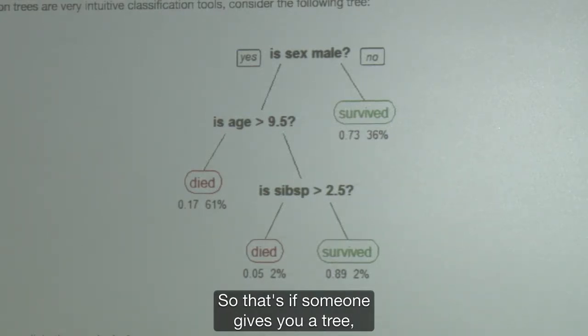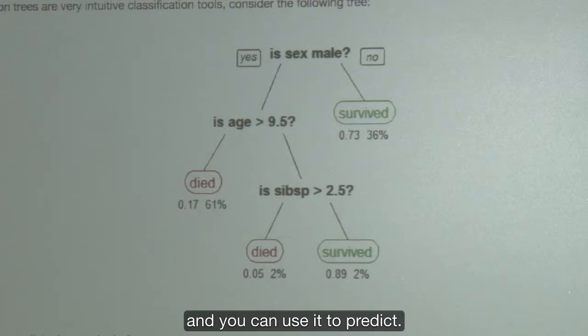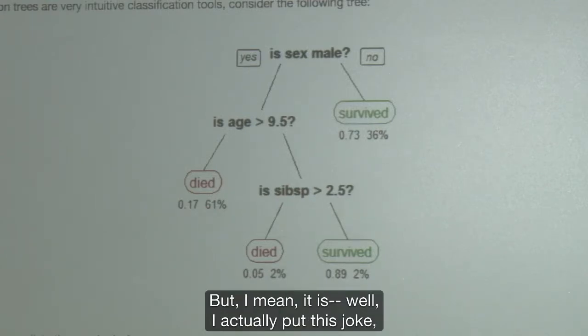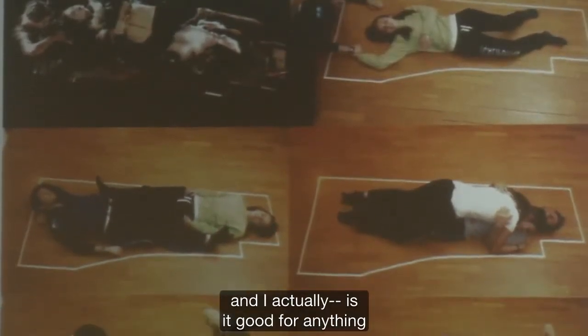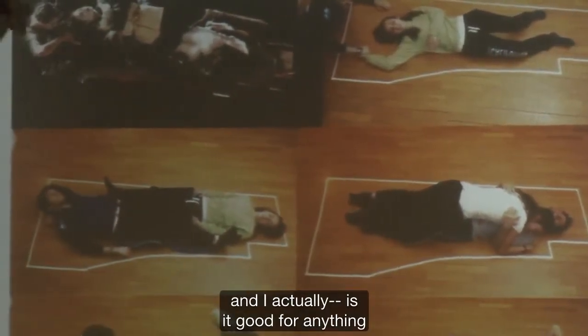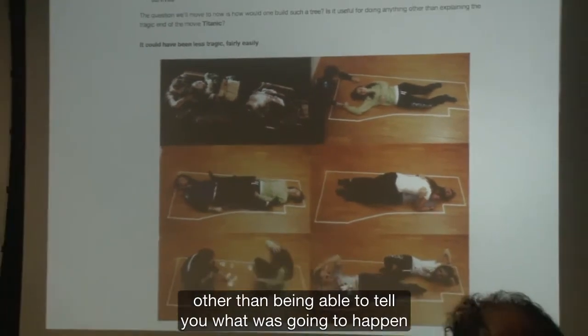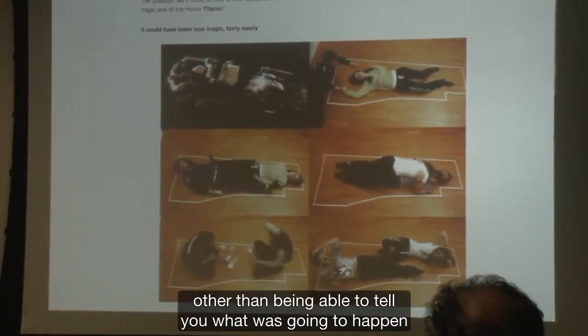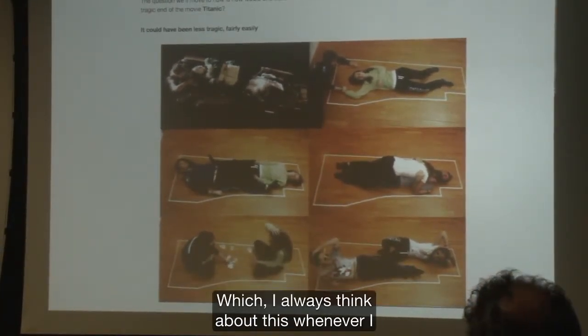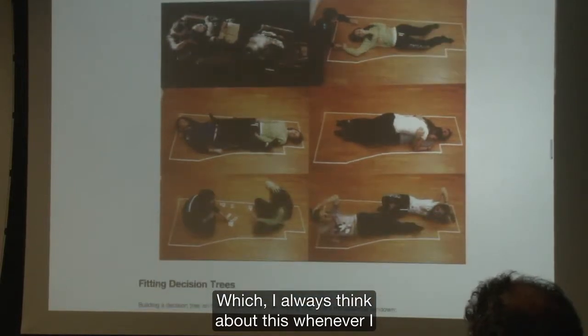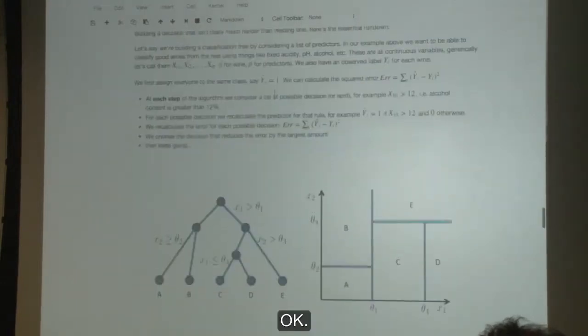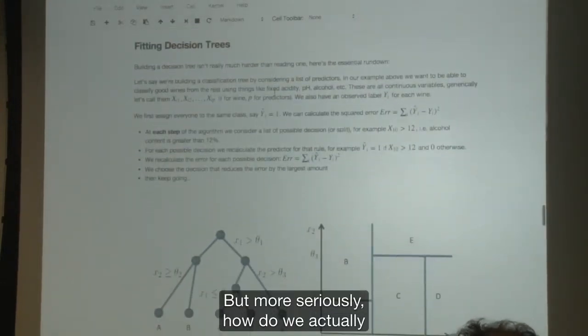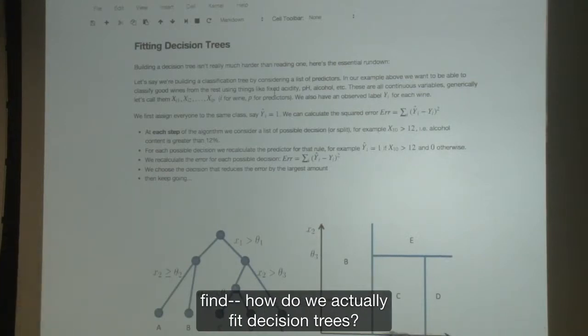So that's how you use this in order to predict. So that's if someone gives you a tree, and you can use it to predict. But is it good for anything other than being able to tell you what was going to happen at the end of the movie? Which I always think about whenever I see an example on the Titanic.